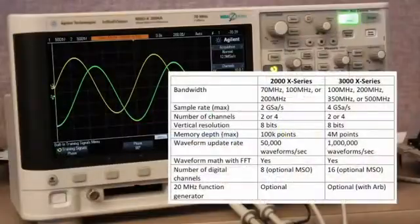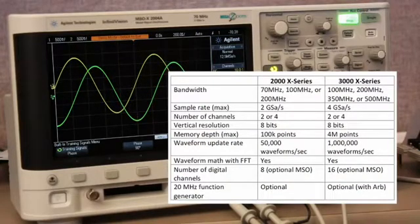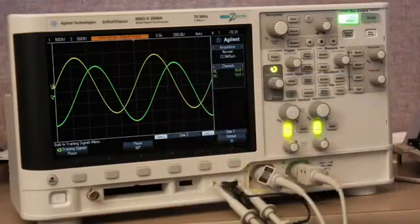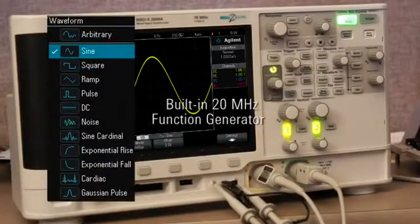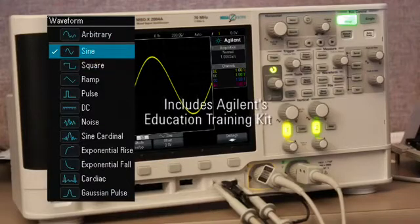The reason this particular model is so popular in the education environment is, first of all, its entry-level price point, which lists for approximately $1,200 in the U.S. before any education discounts or promotions are applied. Secondly, these scopes can be configured with a built-in function generator, and finally, the education training kit.